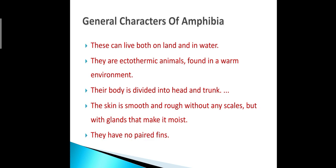Let us start with the general characteristics of Amphibia. Amphibian animals can live both on land as well as in water. They are ectothermic animals found in warm environments. Their body is divided into head and trunk, meaning the neck is absent. The skin is smooth without any scales but has glands — specifically mucous glands in the epidermis that secrete mucus to keep the skin moist. They have no paired fins but have limbs.